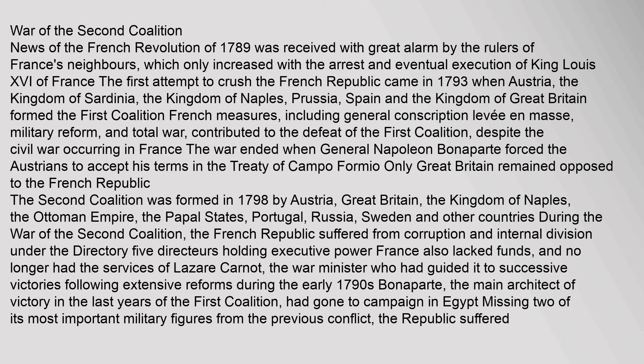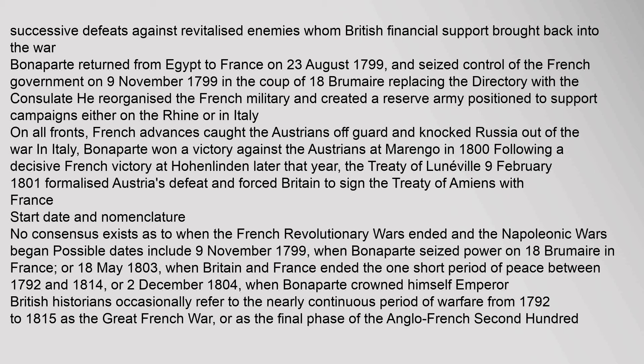Successive defeats against revitalised enemies, whom British financial support brought back into the war, followed. Bonaparte returned from Egypt to France on 23 August 1799 and seized control of the French government on 9 November 1799 in the coup of 18 Brumaire, replacing the Directory with the Consulate. He reorganised the French military and created a reserve army. On all fronts, French advances caught the Austrians off guard and knocked Russia out of the war. In Italy, Bonaparte won a victory against the Austrians at Marengo in 1800. The Treaty of Lunéville on 9 February 1801 formalised Austria's defeat and forced Britain to sign the Treaty of Amiens with France.